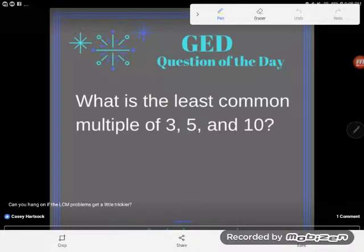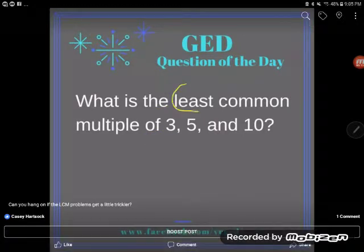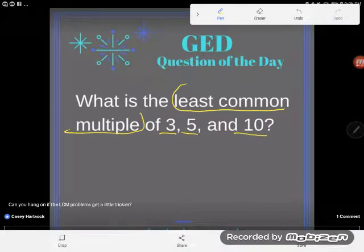Hey GED students, it's GED question of the day time again. We're building on the skill we did last time of least common multiple, but look at this problem - it got a little trickier. Now I'm finding the least common multiple of 3, 5, and 10. But don't worry, even though this problem does look a little more complex.